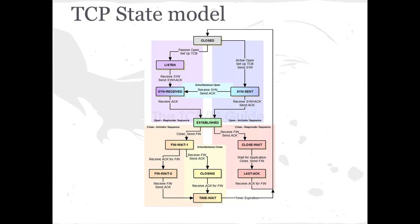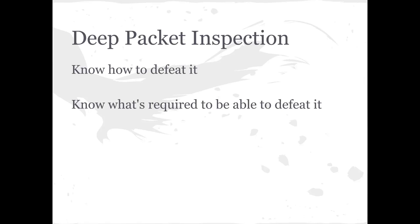There's a TCP state model shown here — this one's probably better than the previous one. It shows color-coded groups of states: FIN_WAIT_1, FIN_WAIT_2, TIME_WAIT, etc. It's pretty simple to understand; you don't have to master it and won't be expected to recreate it. You're also going to have to know about deep packet inspection, how to defeat it, and the attacks we covered in class on how to defeat it.